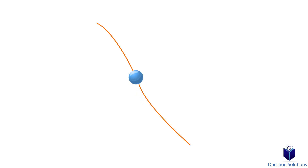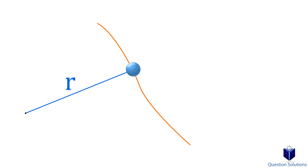Imagine there is a particle that's traveling along a path. From a fixed location, we can determine the position of the particle. That is called the radial coordinate, represented by the letter r. Another way to think about it is to think of r as the position equation. The fixed position is called the origin. If we have a fixed reference line, the angle the particle makes between that line and the radial coordinate is represented with the theta symbol. Theta is called the transverse coordinate.